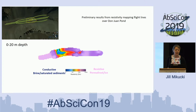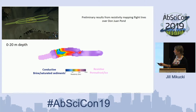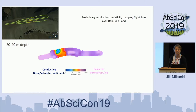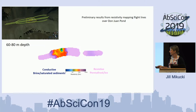SkyTEM is a tool that might help us reveal what's below. Here's some preliminary data from our SkyTEM survey this past November — these are the lines we flew, about three and a half kilometers. Taking 20-meter depth slices, you can see Don Juan Pond circled here — it shines up in that cool, conductive color versus the highly resistive permafrost surrounding it. Going down 20 to 40 meters, you can still see this brine — the pond itself is only 30 centimeters deep — suggesting there's at least very salty, potentially saturated sediment some 40 meters below. Down to 60, 80, 100 meters it starts to disappear.